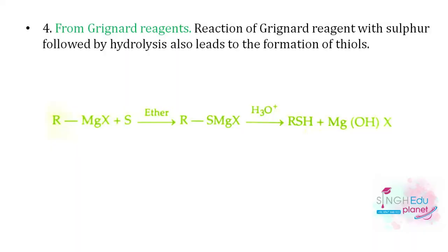Fourth method: from the Grignard reagent. The Grignard reagent is reacted with sulfur, producing a sulfur-containing Grignard reagent salt. Upon hydrolysis, thiol is obtained. This is analogous to the alcohol chapter preparation, making it an easy reaction to remember.